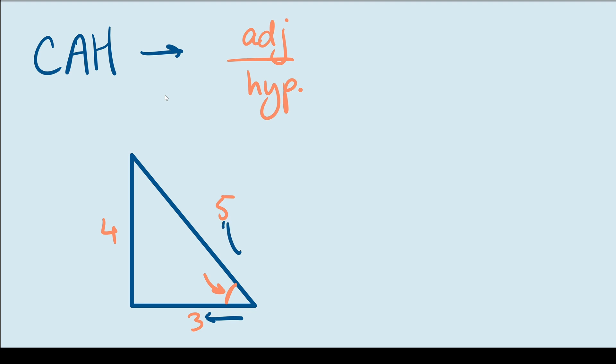Once again, our hypotenuse is still 5. So, the cosine of this angle is going to be adjacent over hypotenuse. Adjacent is 3. Hypotenuse is 5. So, the cosine of that angle is 3 over 5.